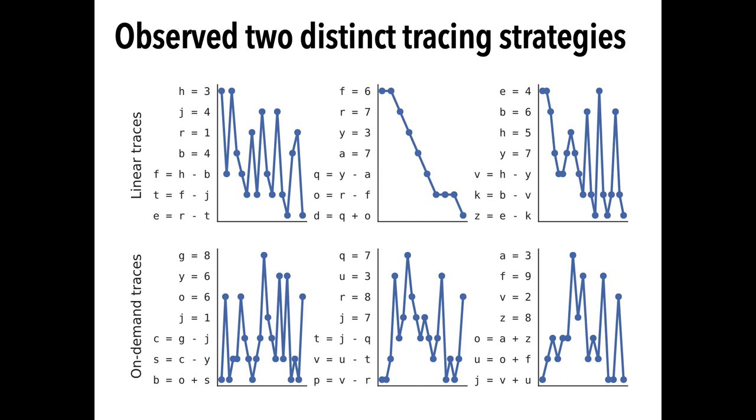Here are some actual traces from participants in our study. First, we observed that participants adopted one of two distinct strategies that we called linear and on-demand. Linear is going primarily top to bottom, as hypothesized. So for example, the top-middle trace is very clearly linear.